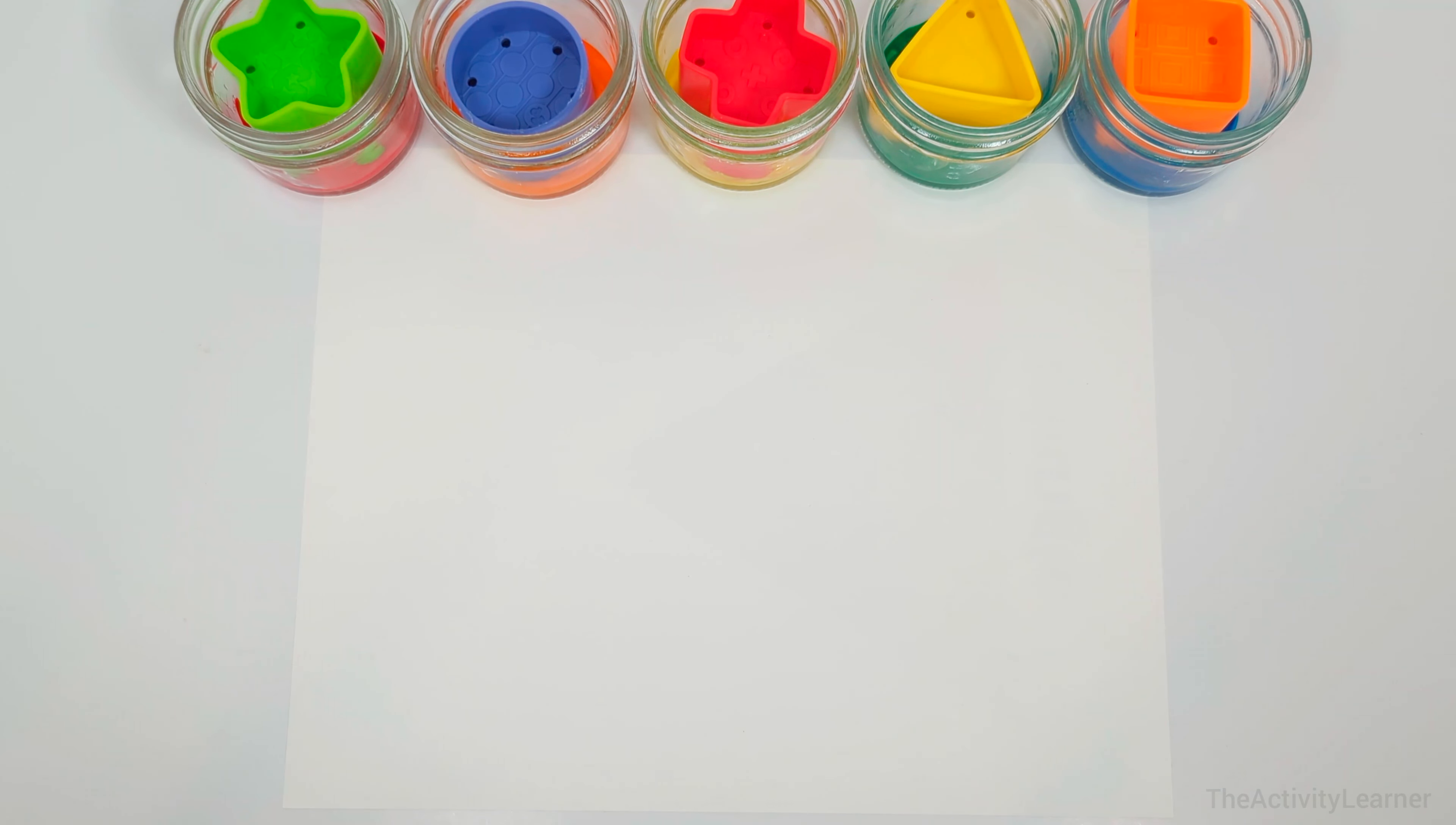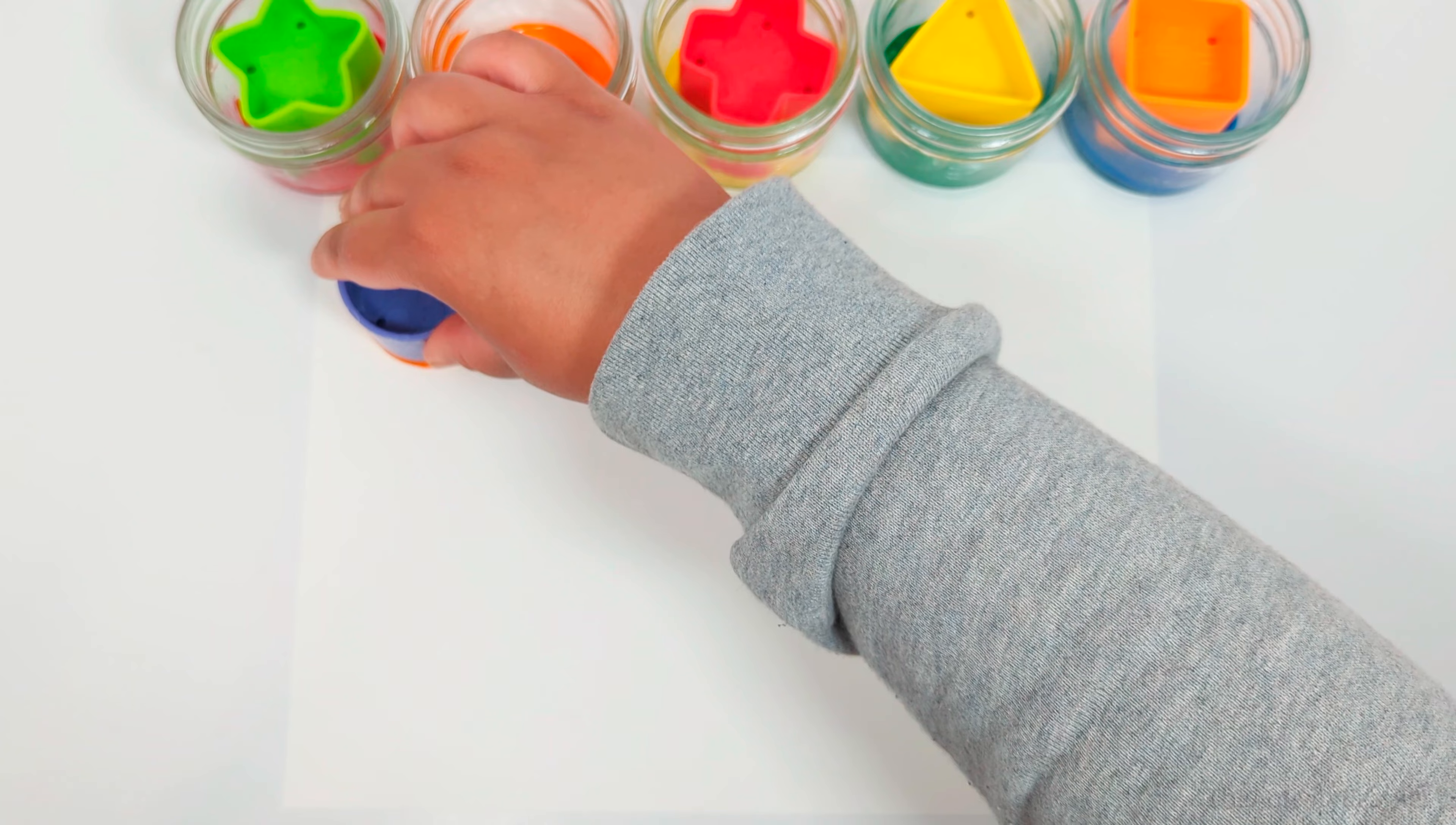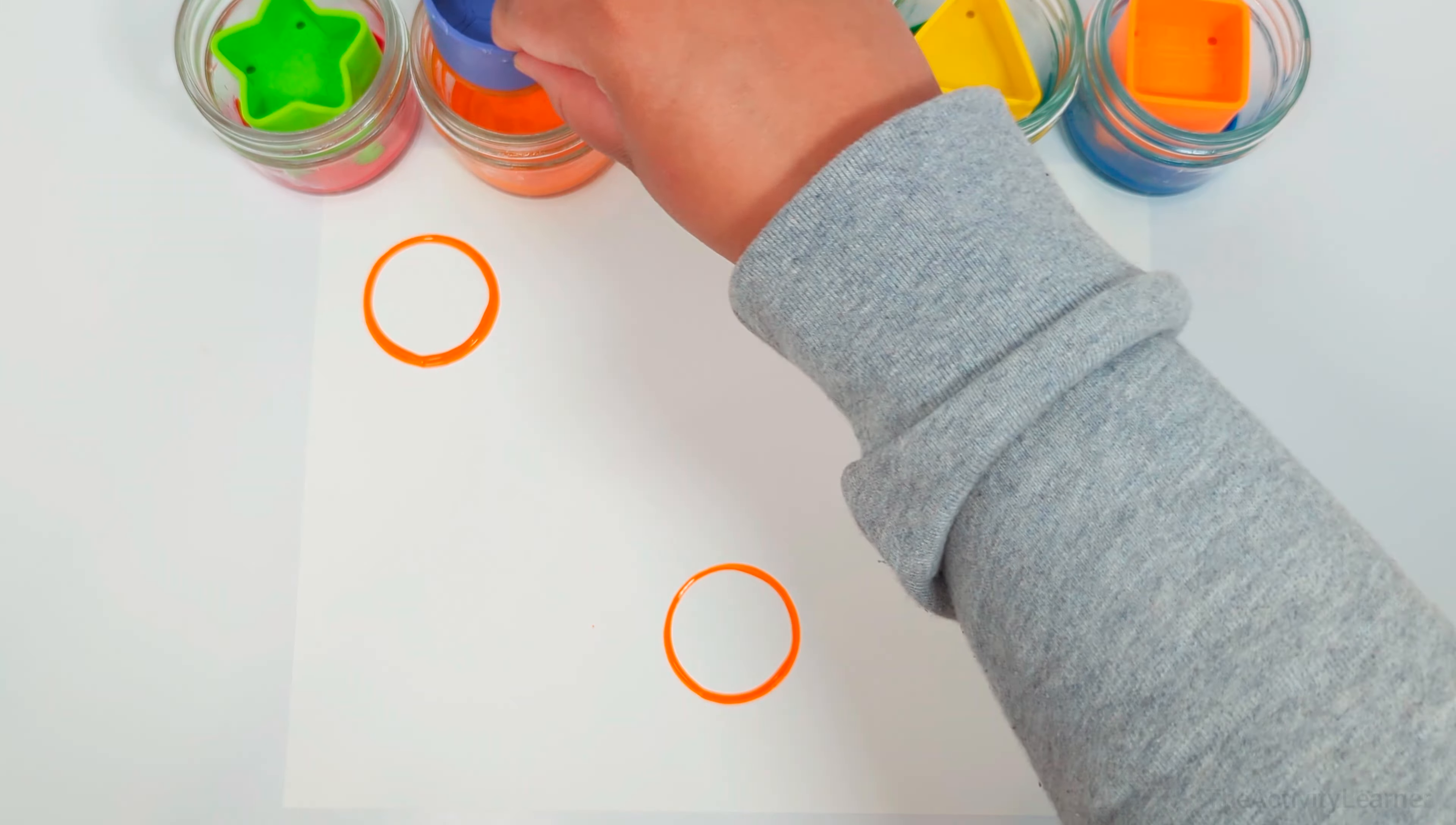Now we can begin painting using our shapes. I'm going to start with a circle. I made 3 orange circles.